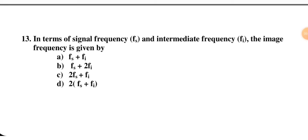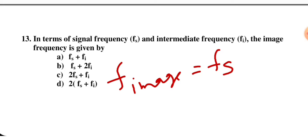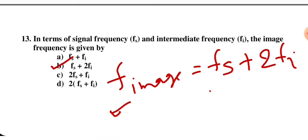The image frequency formula: f_image = f_s + 2·f_i, where f_s is the signal frequency and f_i is the intermediate frequency. So B is the right option. You should remember this formula because you may be given any two of the three frequency values and asked to find the third.